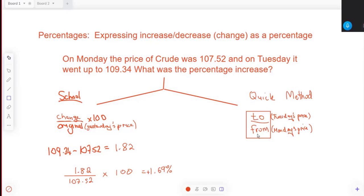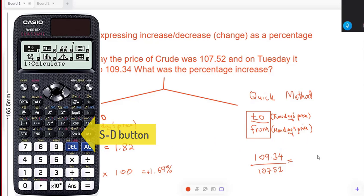So we do this: to divided by from. For us, that would be the Tuesday price, which is 109.34, and where are we coming from? We're coming from 107.52. Put that into the calculator and let's see what it throws up.